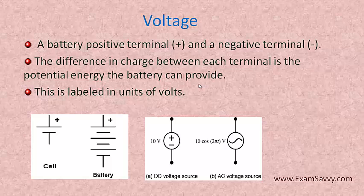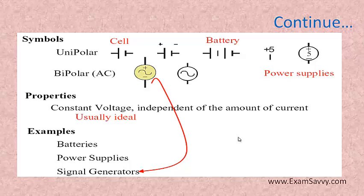We will see the symbols for voltage in case of cell and battery. DC voltage will be represented with plus and minus, and AC voltage will be represented as a wave, indicating it is an AC voltage source. If it is unipolar, the symbol will be like this — plus and minus for a cell, and plus minus plus minus in case of a battery. We have power supplies like plus 5 volt, plus or minus 5 volt, AC or DC, and bipolar AC. The property of voltage will be constant and independent of current, so it is usually called ideal.